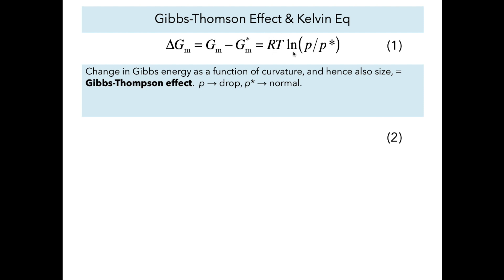This difference shows that the change in Gibbs energy is a function of the curvature, and that curvature is a function of the size of the particle. The change of the Gibbs energy is a function of the size of the particle. That's known as the Gibbs-Thomson effect. The vapor pressure inside a droplet is different than that inside or behind a flat interface.